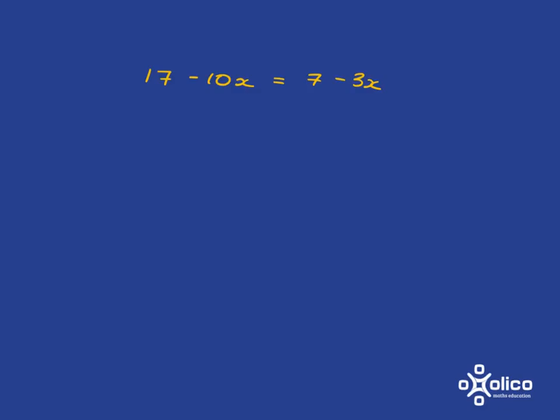Okay, a final example. Again, we want to get x's on its own over there and numbers on our own over there. So what we're going to do is get rid of the 17, balance the equation, and so what we're going to get: 7 minus 17 is minus 10.